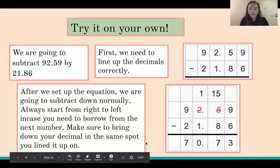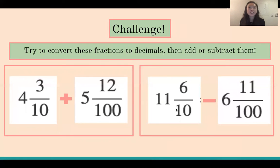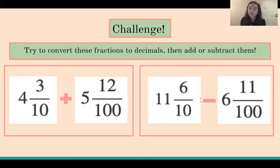Now let's do a challenge. Try to convert these fractions to decimals, then add and subtract them. We have: 4 and 3 tenths plus 5 and 12 hundredths, and 11 and 6 tenths subtracted by 6 and 11 hundredths. First find the decimal conversions, and then we'll use those to add and subtract.